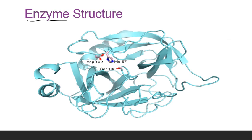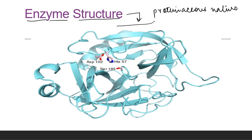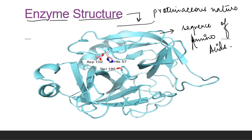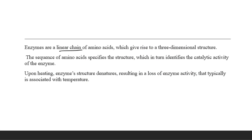This is the structure of an enzyme. Enzymes are proteinaceous in nature, made up of a sequence of amino acids. Enzymes are linear chains of amino acids which give rise to a 3D structure. The sequence of amino acids specifies a structure which in turn determines the catalytic activity of the enzyme.